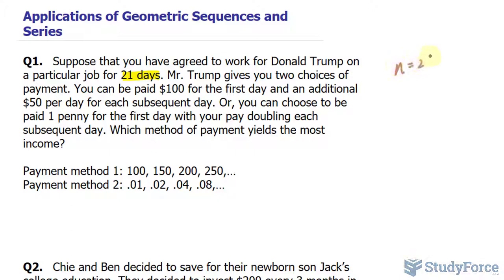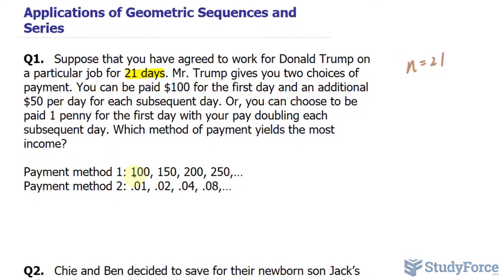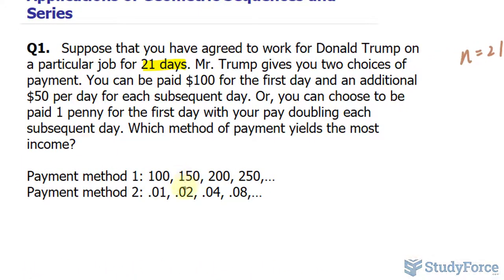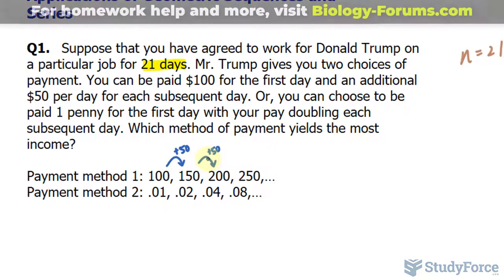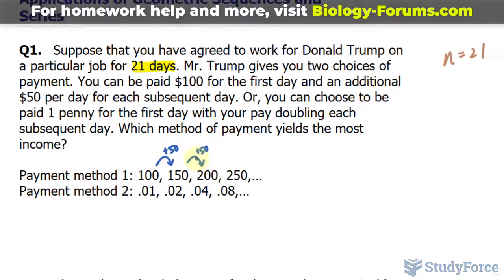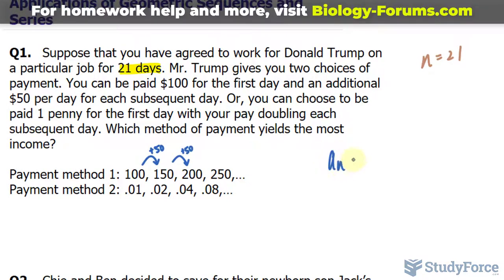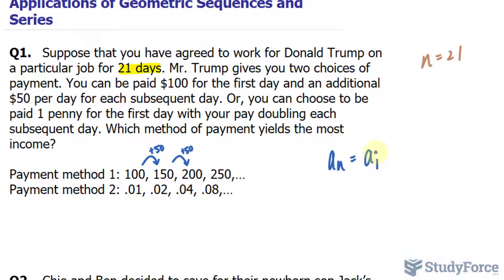We'll set N equal to 21. Let's analyze the payment methods. In payment method one, we go from $100 to $150 to $200 and so on. There's a common difference here of $50 per day. And when there is a common difference in a sequence of numbers, we call that an arithmetic progression. So this is an arithmetic sequence, and we can model arithmetic sequences like this: a sub n is equal to the very first number in the sequence plus n minus 1 times the common difference, in this case 50.